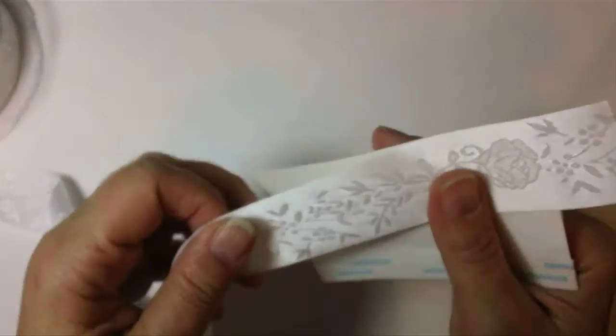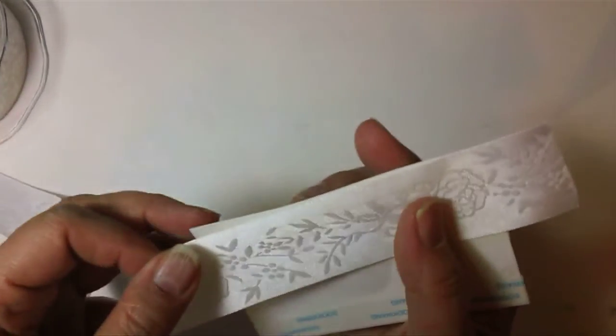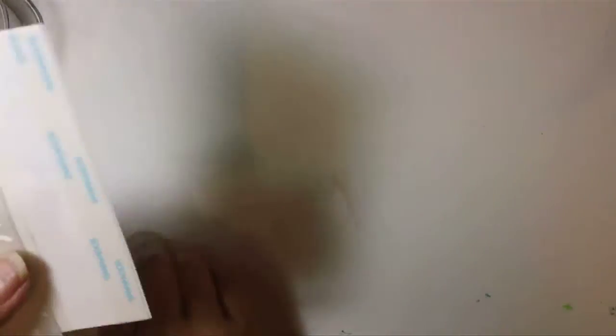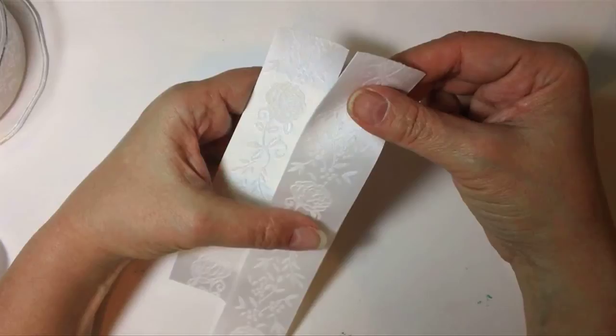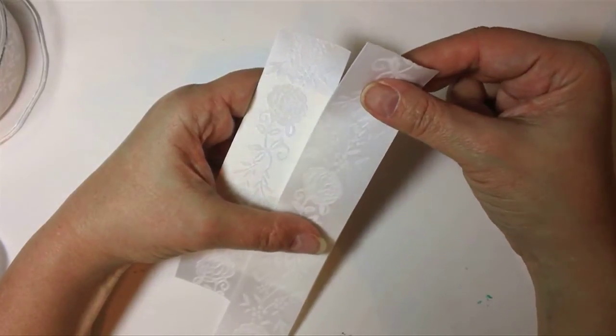I'm going to peel off two of them and then add a piece of this embroidered ribbon. This is an inch and a half embroidered ribbon. It is so gorgeous. Oh my gosh, really beautiful. I'm going to attach that to the card and I'm going to peel off the last one and put the other piece on.